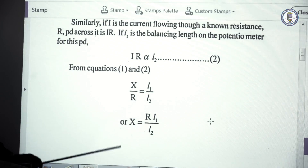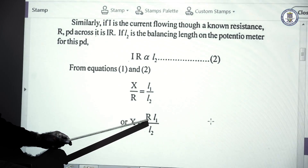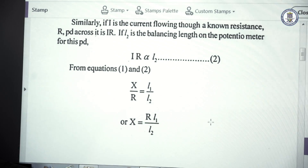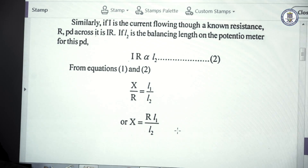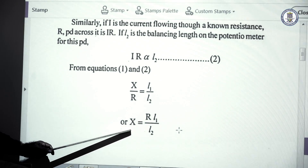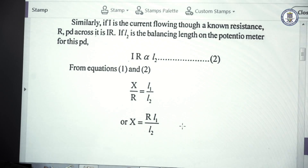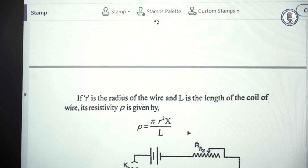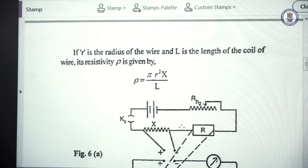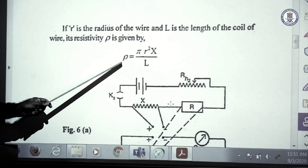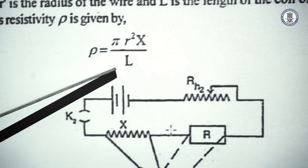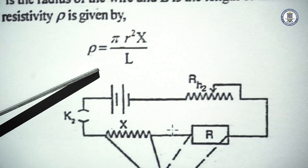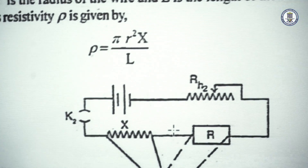From that, the unknown resistance x can be written as r into l1 by l2, where l1 and l2 are the balancing lengths obtained for resistance x and resistance r respectively. If small r is the radius of the wire and capital L is the length, then the resistivity is given by pi r squared x by L. Using this formula we can calculate the resistivity of the material of the wire.